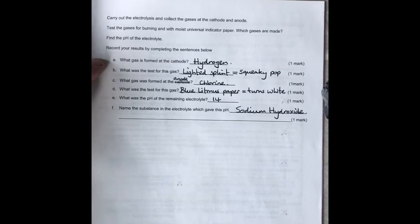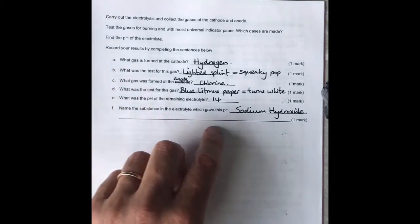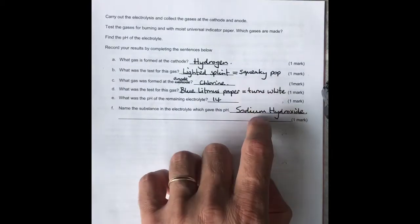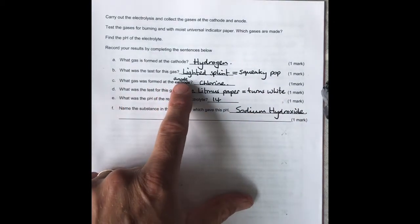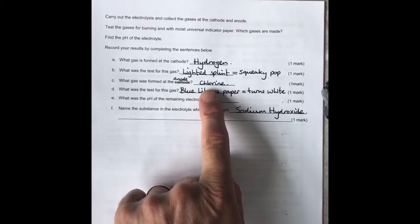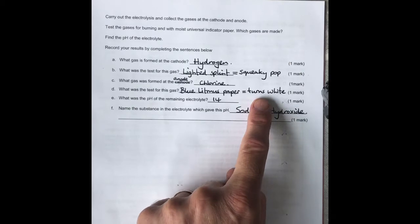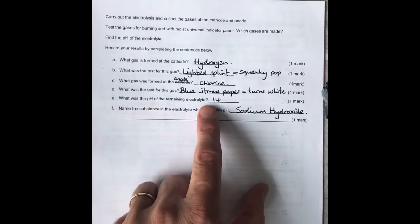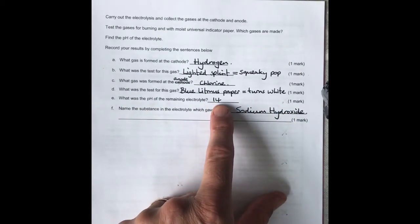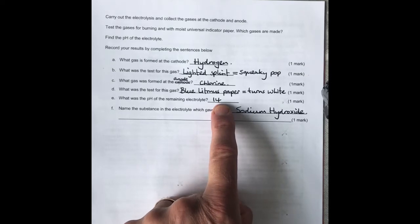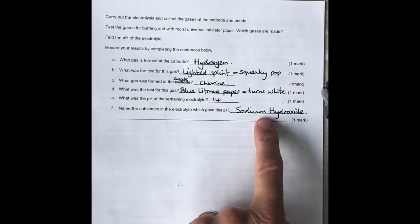But I did give you the information in the video to help you answer these questions. The gas that's formed at the cathode is hydrogen. The test for the gas is a lighted splint which gives us a squeaky pop. The gas that's given off at the anode is chlorine, and the test is blue litmus paper - it turns white. The pH of the remaining electrolyte is 14, and that's sodium hydroxide. It's a strong alkali.